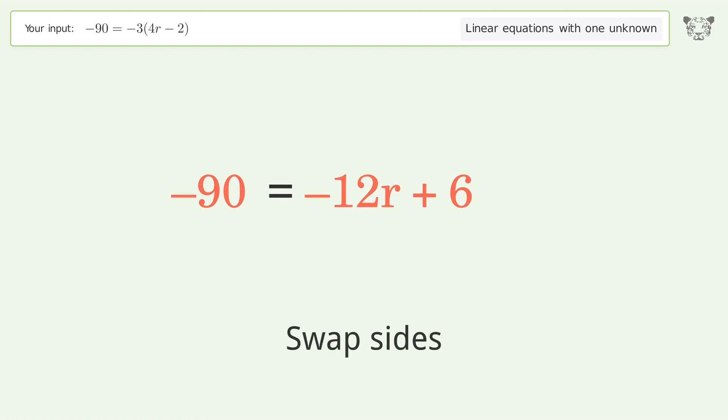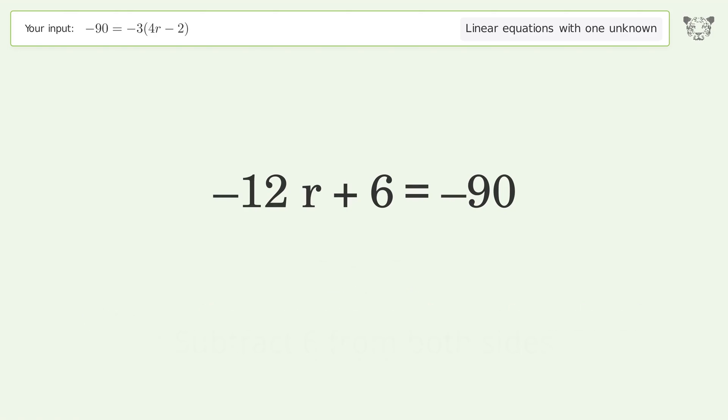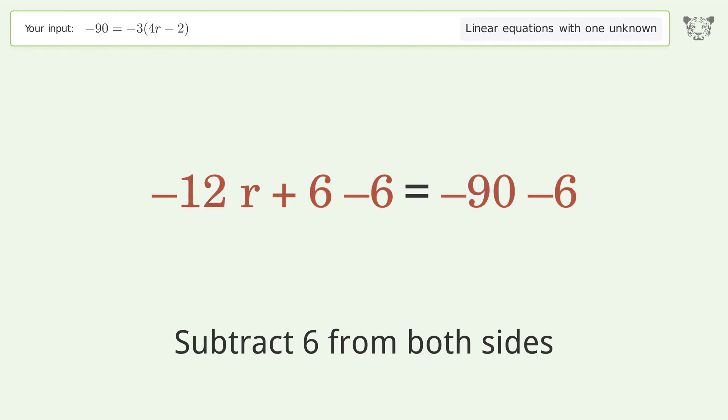Swap sides. Group all constants on the right side of the equation by subtracting 6 from both sides. Simplify the arithmetic.